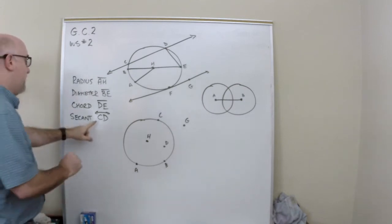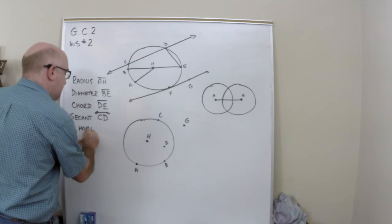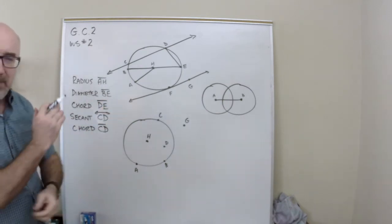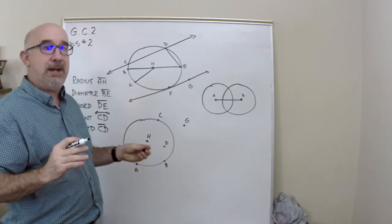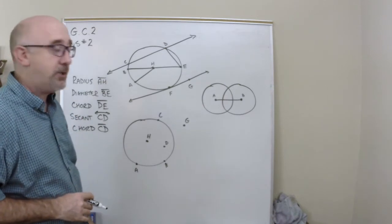Now, notice it says secant. I could talk about the chord CD. Do you see the difference there? A chord is a segment and a secant is an entire line. So, there's a difference there to notation.